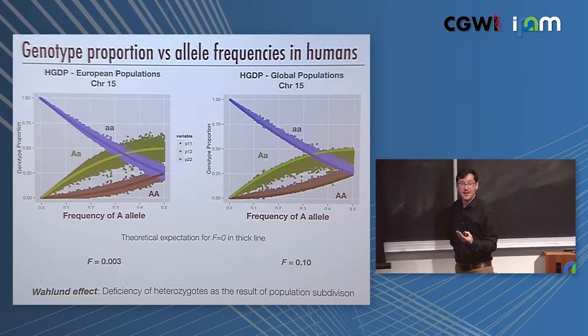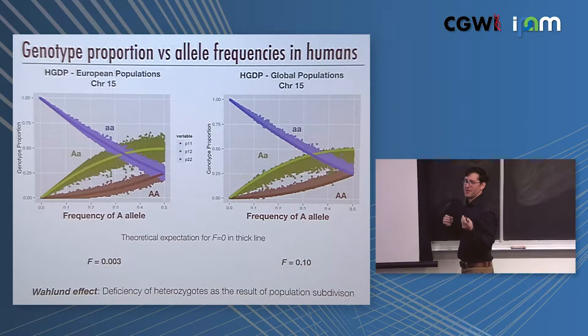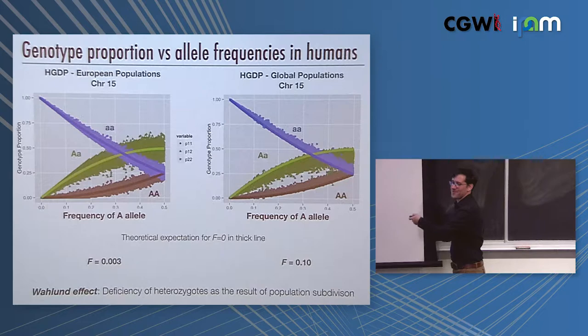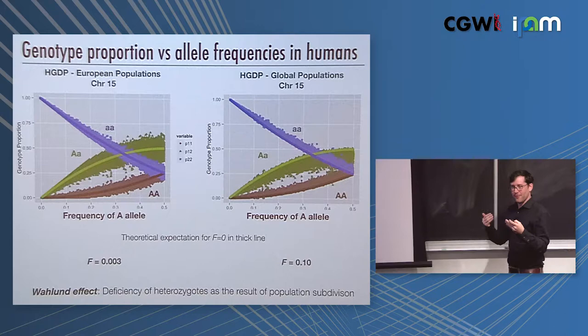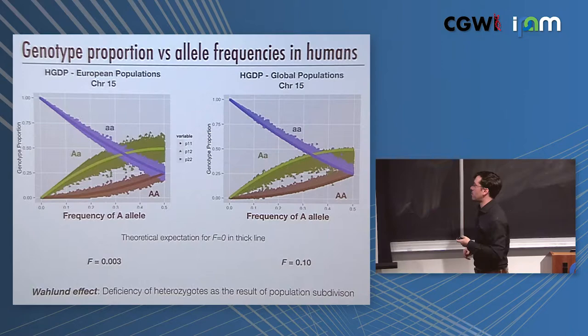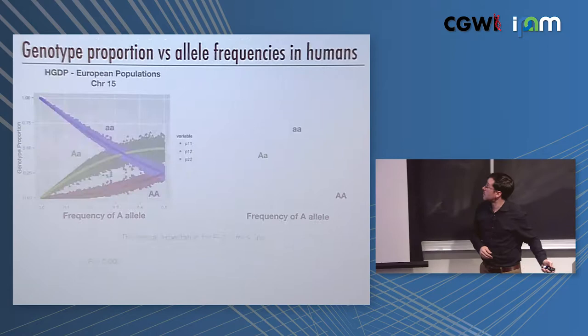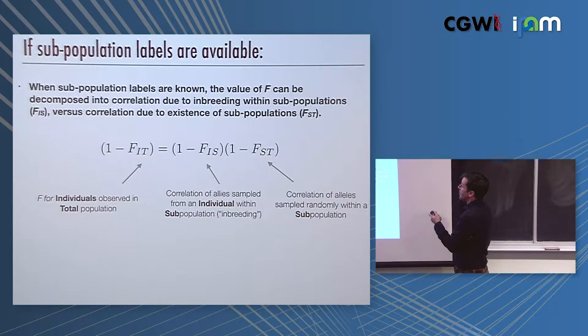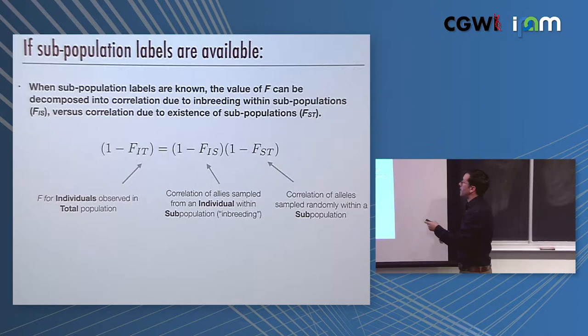This F measures the correlation. It can arise for reasons besides population structure. It could be that individuals are inbred. The big A's are paired with big A's because mothers tend to marry their cousins, and that would lead to an excess of the coupling of these alleles. The fact that this signal disappears when you focus on one part of the world suggests that it's population structure and not inbreeding. To deal with this, that there are different reasons for why the correlation can arise, you can actually partition the correlation into components. That's what population geneticists do.